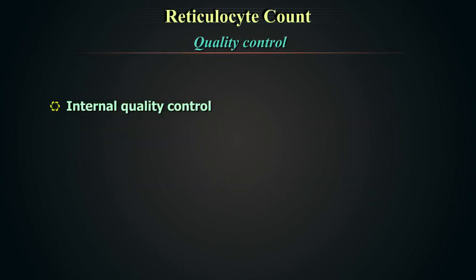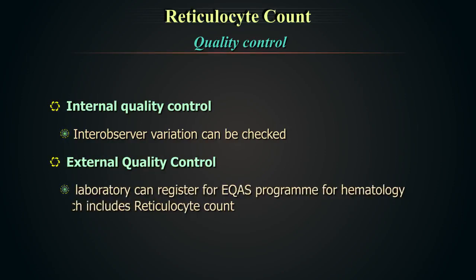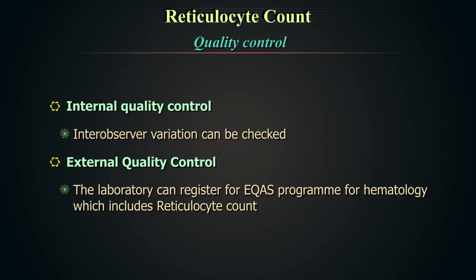For internal quality control, inter-observer variation can be checked and the lab may define suitable acceptance criteria. For external quality control, the laboratory can register for the EQAS program for hematology, which includes reticulocyte count.